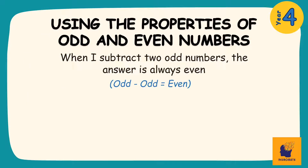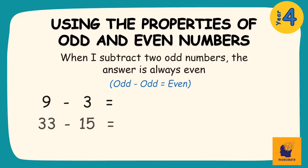The next thing we need to understand is that when we subtract two odd numbers, the answer is always going to be an even number. What this means is that when I subtract an odd number from an odd number, my answer will be an even number. So I could have problems like 9 take away 3, 33 take away 15, or 117 take away 101. Because two odd numbers are being subtracted, my answer will be an even whole number.